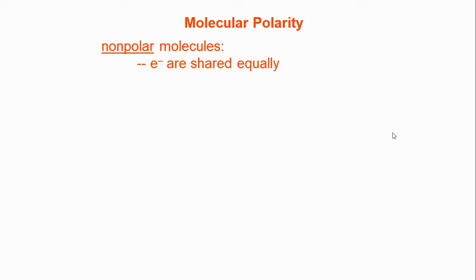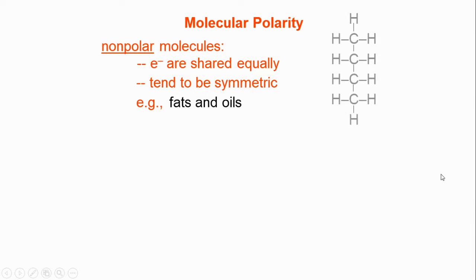In terms of molecules, we had discussed polarity of molecules. Molecules can be non-polar, and what that means is the electrons are shared equally. When you look at these, they tend to be rather symmetric. An example of non-polar molecules would be things like fats and oils. I've drawn here a simple hydrocarbon with one, two, three, four carbons on it. This would be butane, a non-polar hydrocarbon.